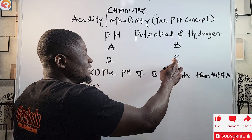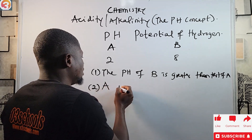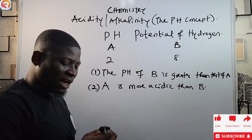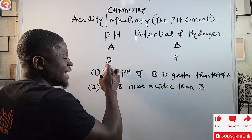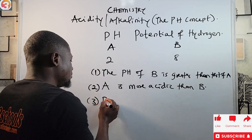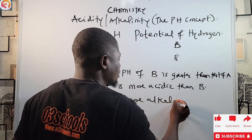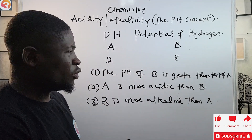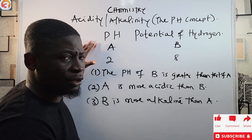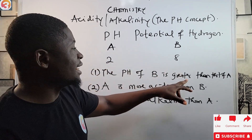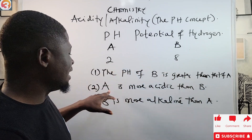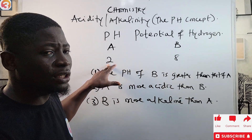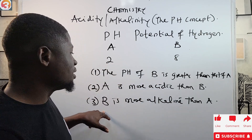From those values we can also infer: first, A is more acidic than B; and second, B is more alkaline than A. A has a lower pH value of 2, making it more acidic, while B has a higher pH value of 8, making it more alkaline.